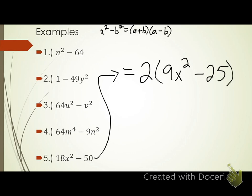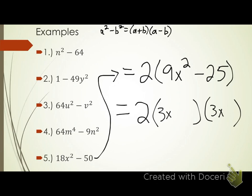Today, start looking for the GCF before you do anything else. Now in the parentheses, do I have a subtraction problem? Yes. Can I take the square root of my first term? Yep. Can I take the square root of my second term? Yep. Now in the parentheses I do have a difference of squares, so I can factor that even further. Do not forget about your two outside — that has to be a part of your answer, otherwise it's wrong. What's the square root of 9x squared? 3x. What's the square root of 25? 5. One's a plus, one's a minus.